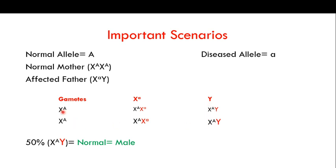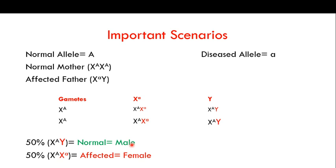Looking at the offspring: all sons are normal because they get their X chromosome from their normal mother. All daughters are affected because they get one X chromosome from their affected father, which carries the diseased allele, making them affected in the heterozygous condition. This confirms the feature that affected fathers only produce affected daughters.